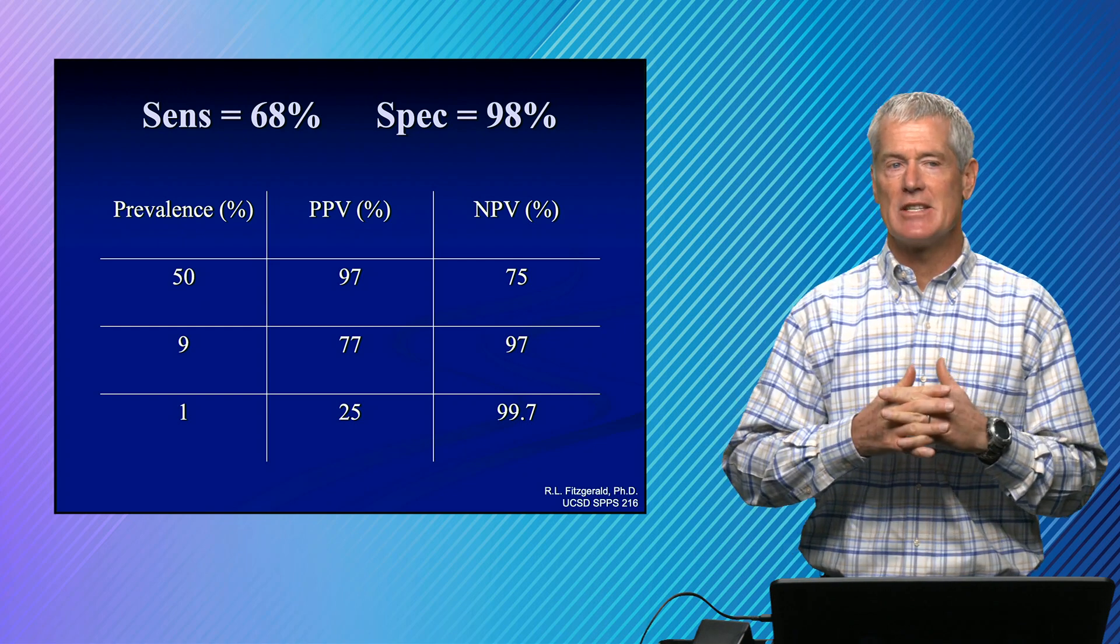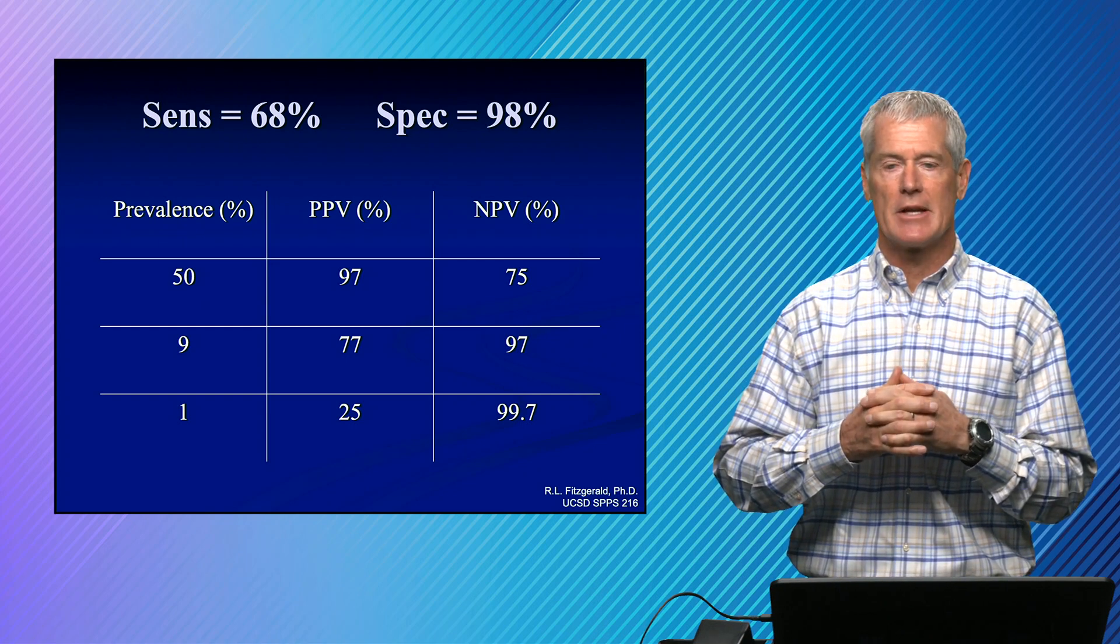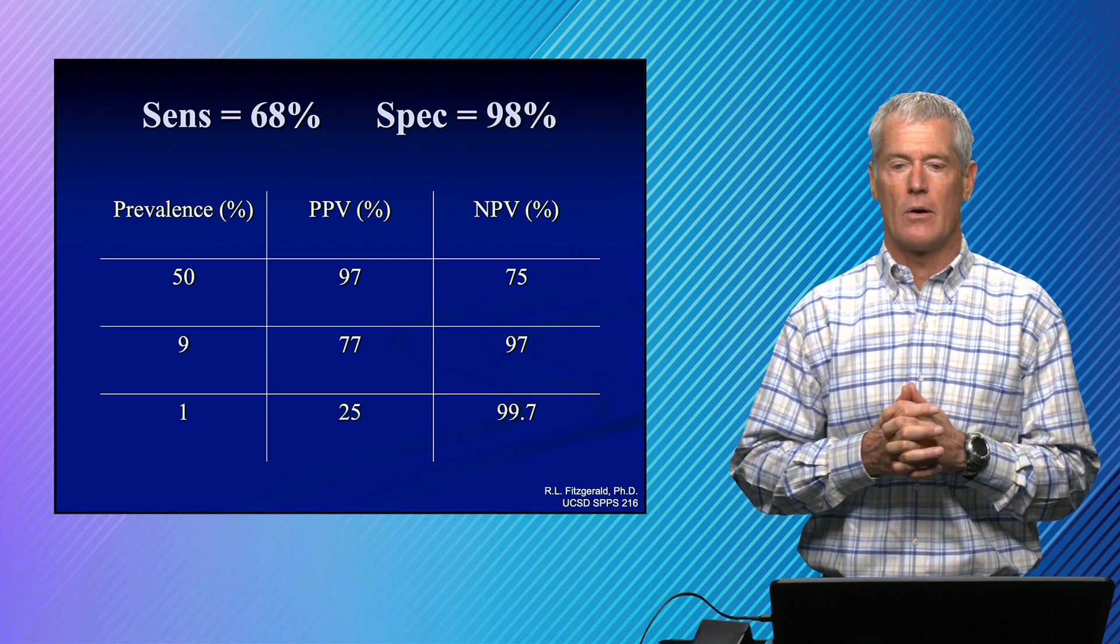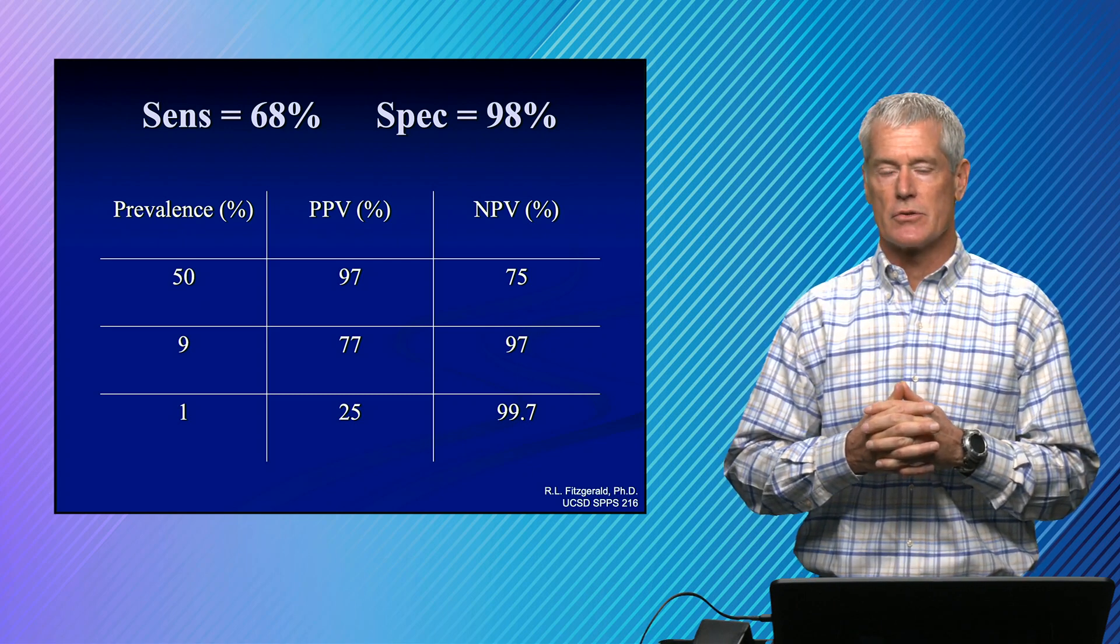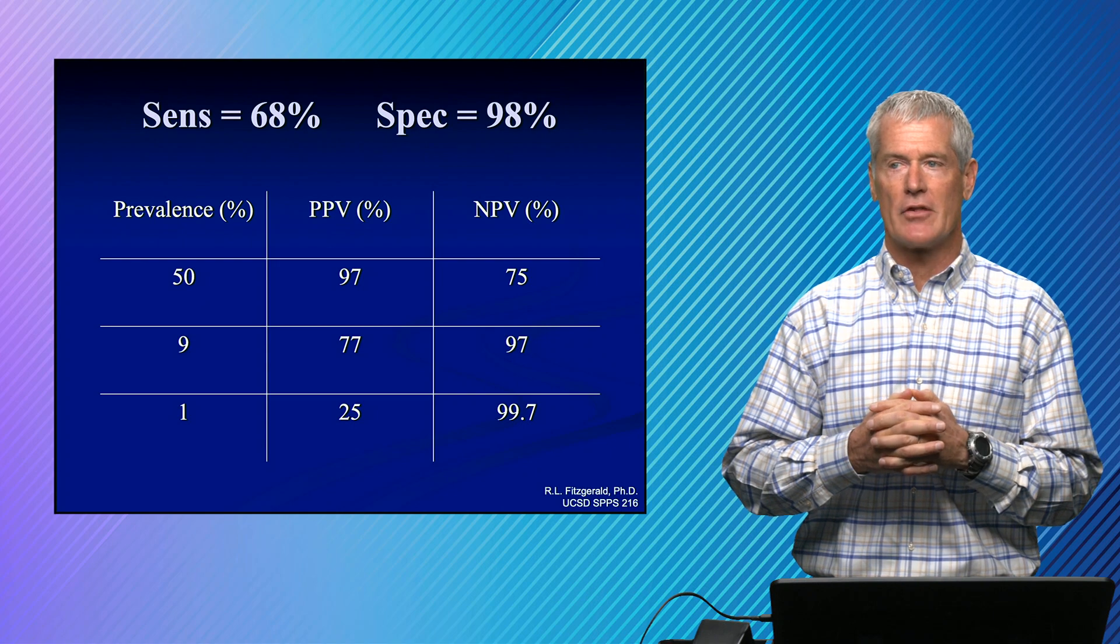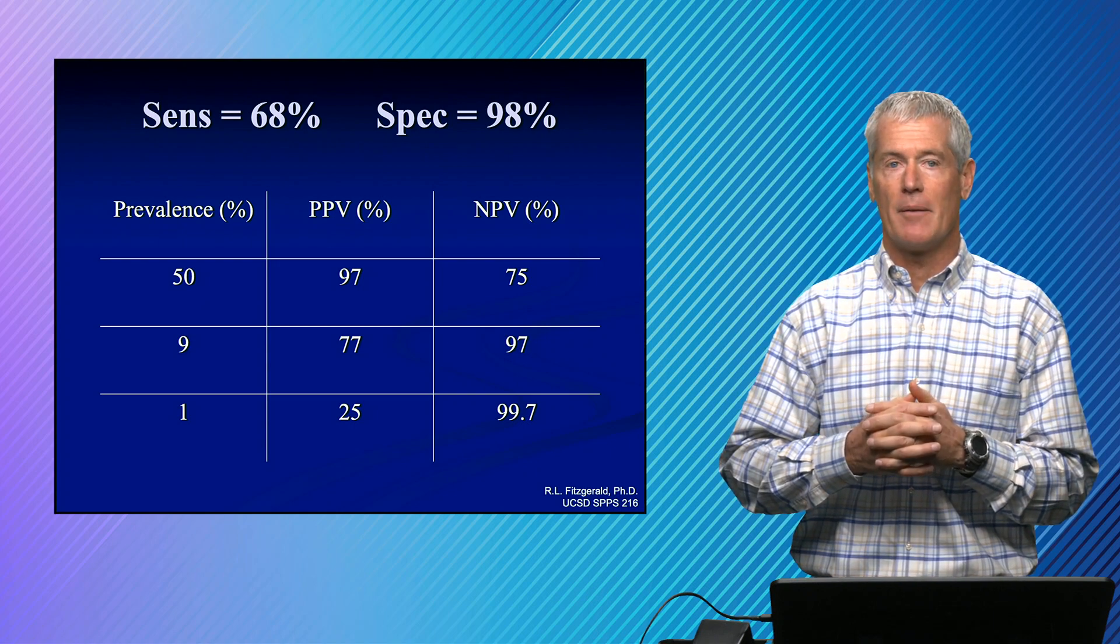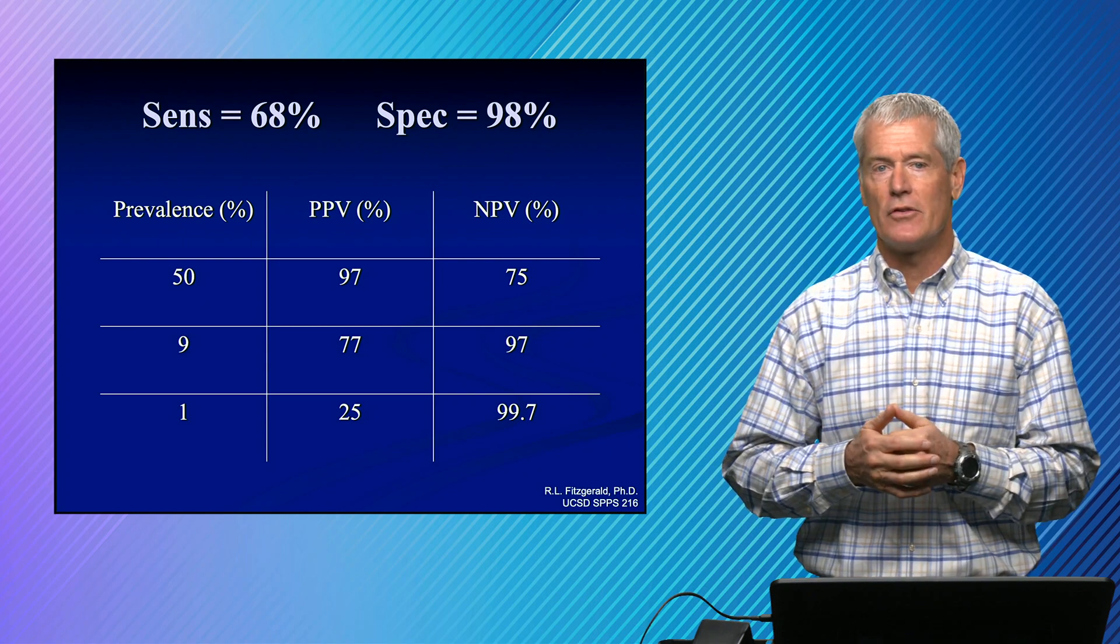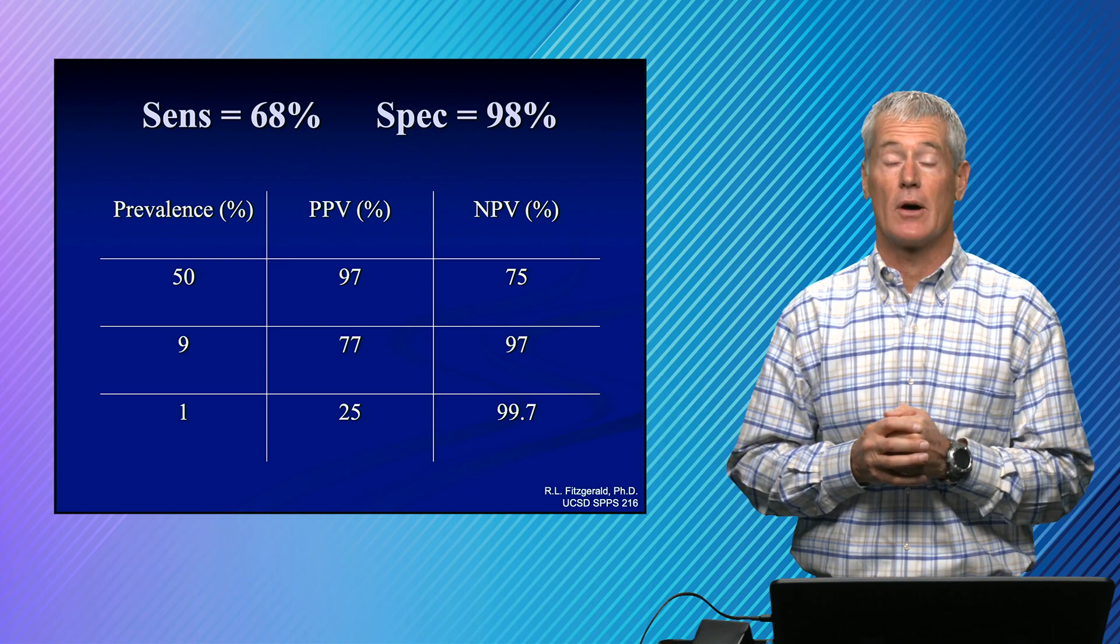So we haven't changed the test at all. It's solely the population that we're testing. And so the reverse is true. As the prevalence decreases, the negative predictive value goes up. It makes sense. If everyone's negative, it's easy to be right when you have a negative result.